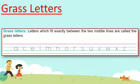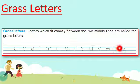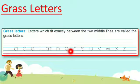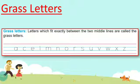Now let's look at Grass Letters. Since we write alphabets in four lines, the middle two lines are blue lines. Letters which fit exactly between the two middle blue lines are called Grass Letters. For example: E, K, M, O, R, S, A, V, W, X, Z — all these letters fit between the two blue lines and are called Grass Letters.